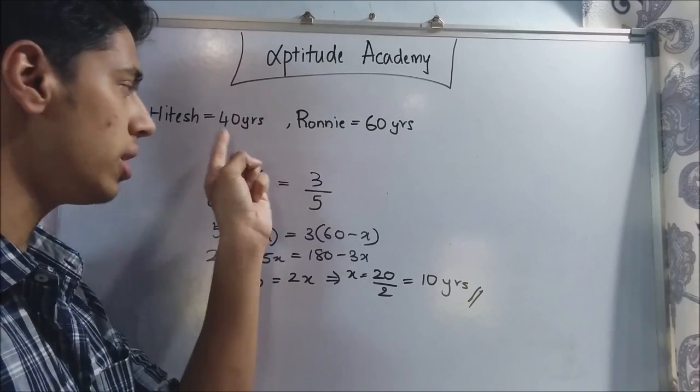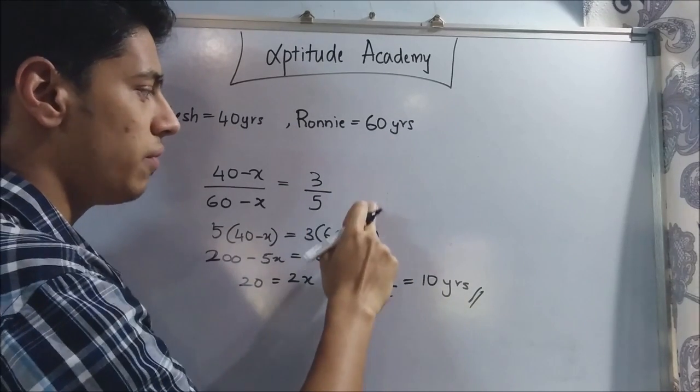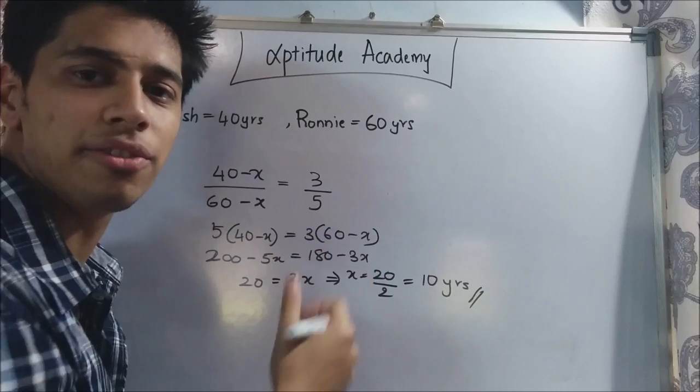Now just see this. If he is 40 years old now, 10 years ago he was 30 and this fellow was 50 years. So 30 is to 50, if you divide by 10 it will be 3 by 5.